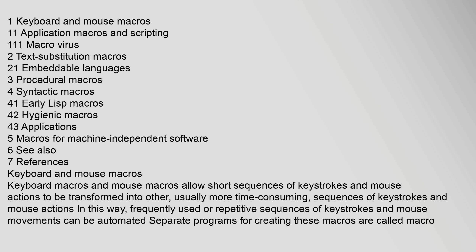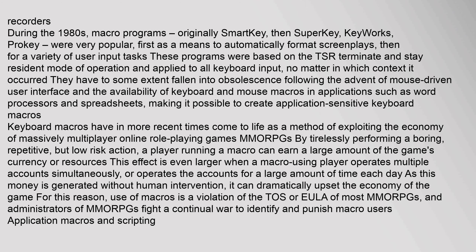Keyboard macros and mouse macros allow short sequences of keystrokes and mouse actions to be transformed into other, usually more time-consuming sequences of keystrokes and mouse actions. In this way, frequently used or repetitive sequences of keystrokes and mouse movements can be automated. Separate programs for creating these macros are called macro recorders.